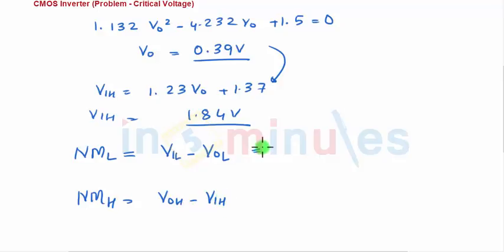VIL we have already found which is nothing but 1.13. VOL is 0. So this is 1.13 volts. VOH is 3.3 minus VIH which is 1.84, which is 1.46 volts. So this is the value of my noise margin for this question.